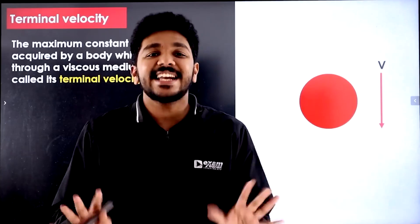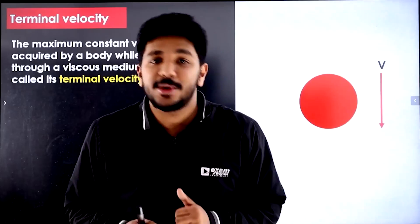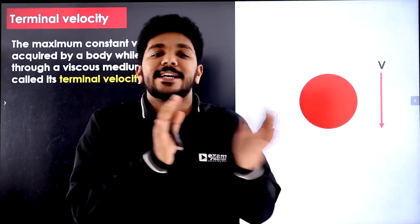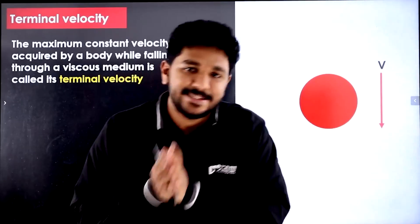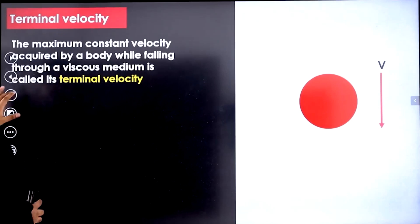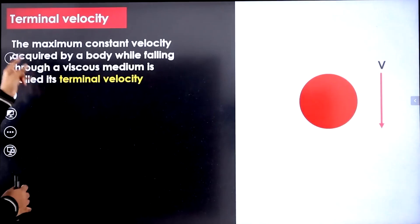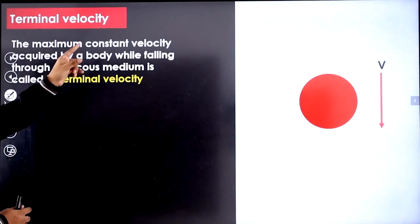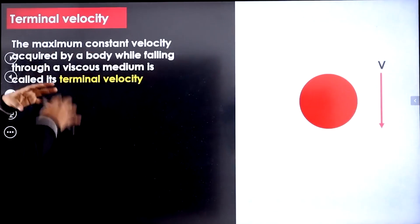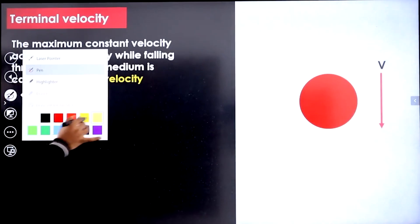This is not the reality — what is the reality? What is the terminal velocity equation? We have to derive the equation. First, the terminal velocity is constant. It is the maximum constant velocity acquired by a body while falling through a viscous medium. It is called terminal velocity.